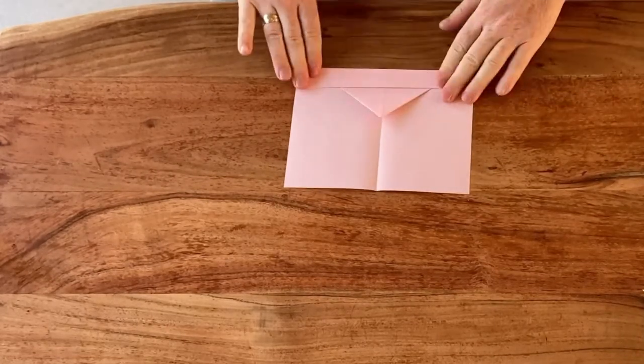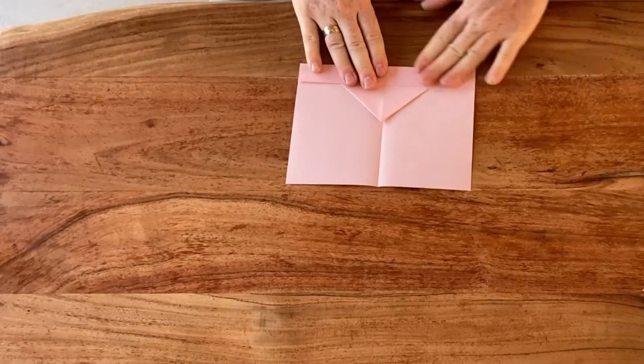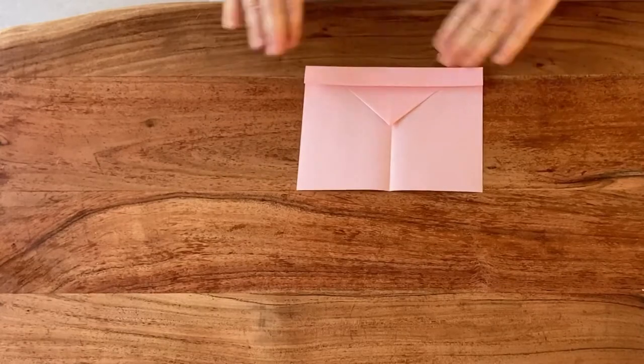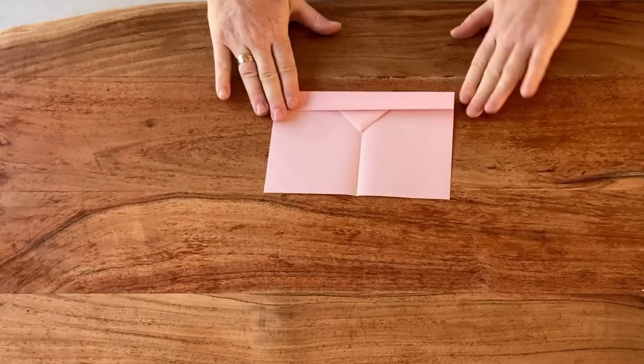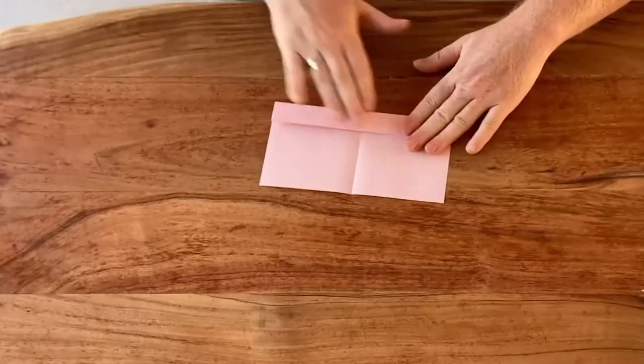You want to really make these creases a bit sharp and make sure they are symmetrical like so. Now we're just gonna roll it up once more and then once more until we get the tip like so.